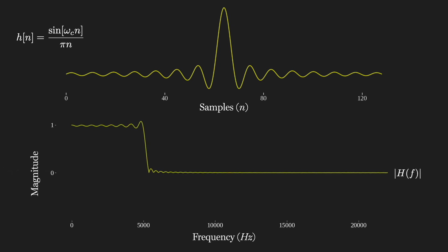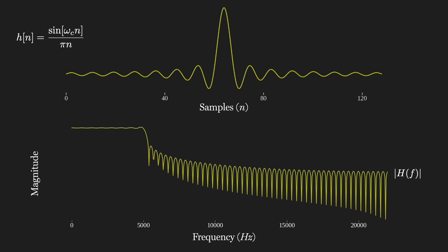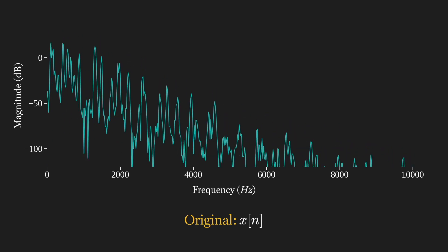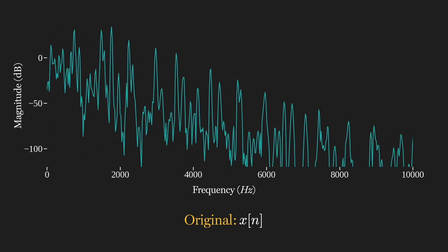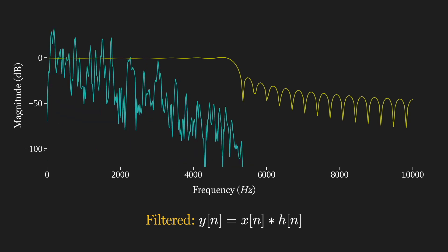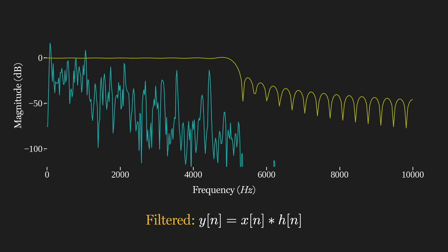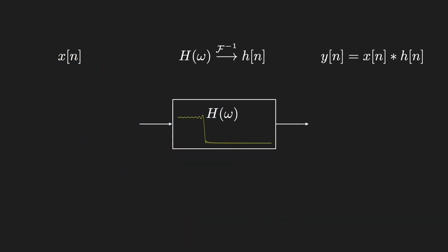Turns out the resulting filter still looks pretty good. Here's the absolute magnitude, which still approximates the ideal low-pass filter. And here it is in decibels, which shows quite a bit of attenuation after the cutoff frequency. It sounds pretty good too.